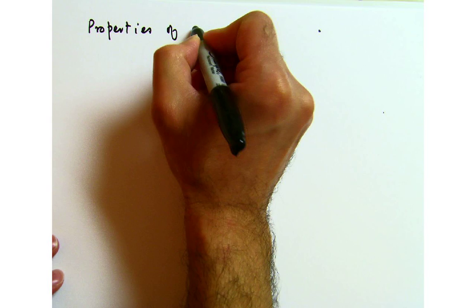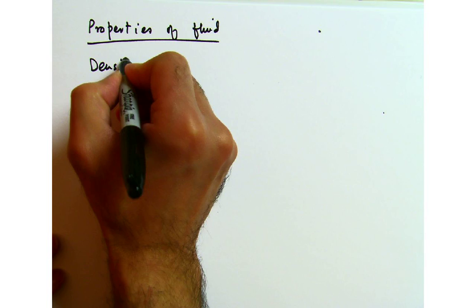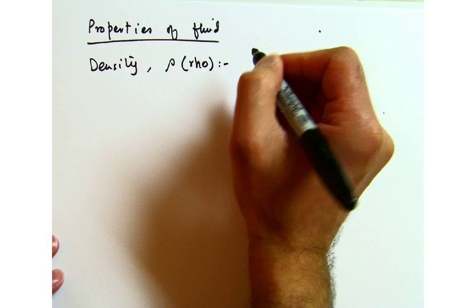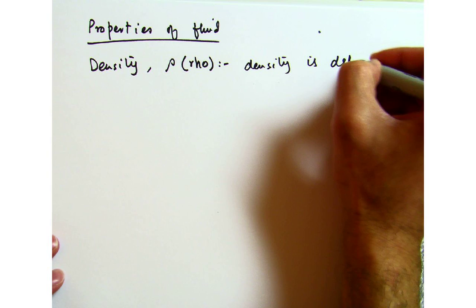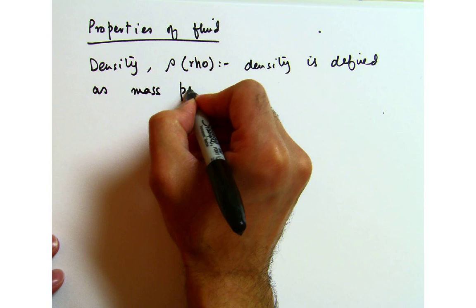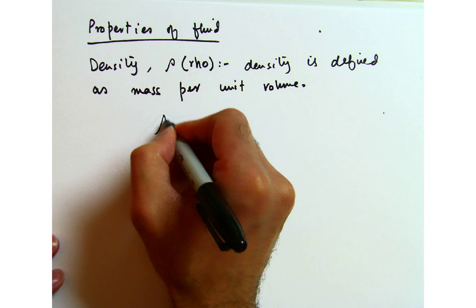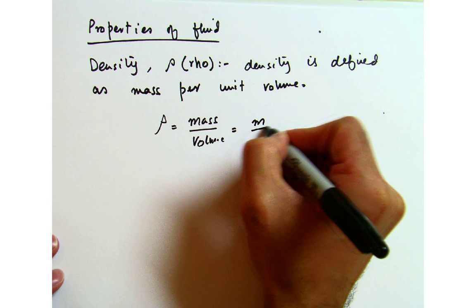The first fluid property is density, represented with the Greek letter rho. It is defined as mass per unit volume. So density equals mass over volume, or rho equals M over V. It has units of kilograms per meter cubed in SI.